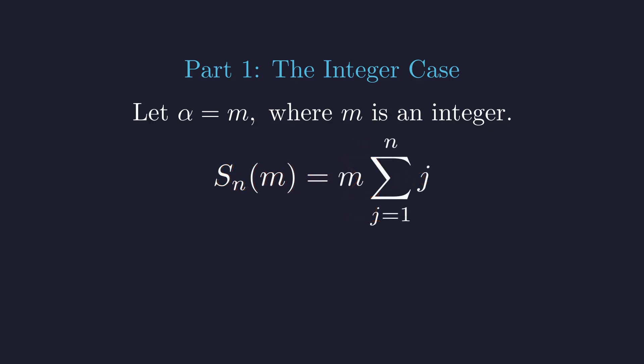This leaves us with m times the sum of the first n positive integers. We can replace this sum with its well-known closed-form expression.